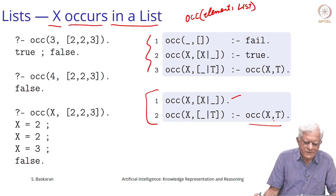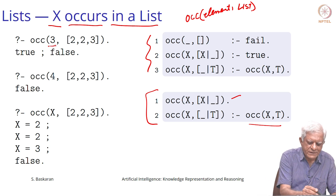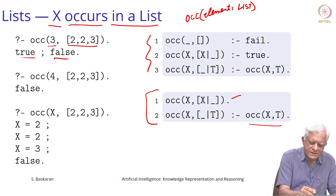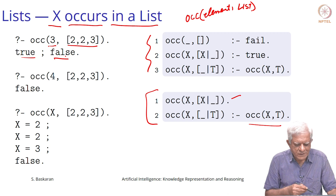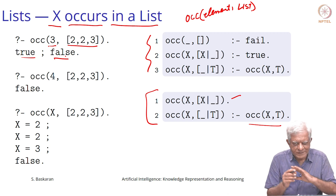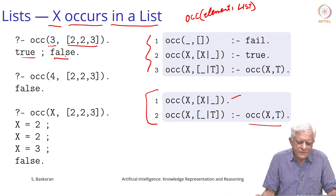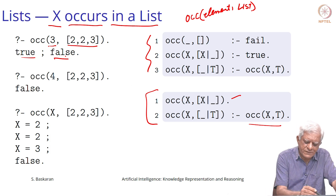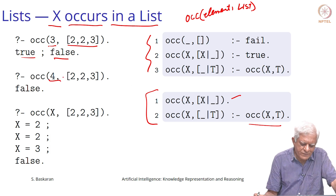Here are some more examples. If you ask whether 3 occurs in the list [2,3], first it will say yes, then looking for another answer it will say false — because it is trying to give you all answers and will look at the entire list before it gives up. If you ask whether 4 occurs in the same list, it will simply say false.